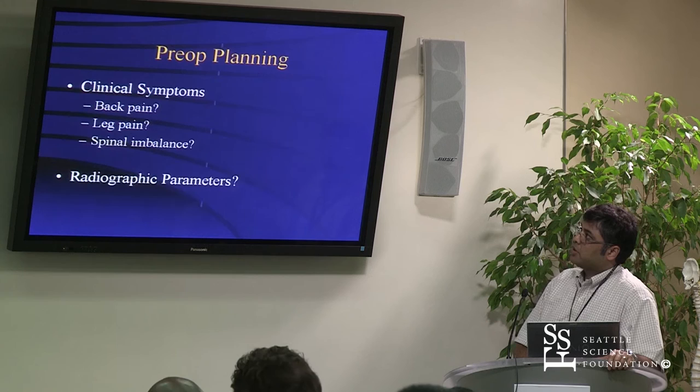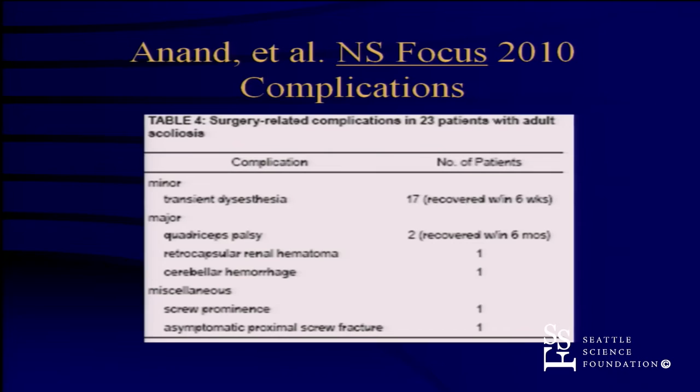This is some of the early work — Neil's early experience in 23 patients in 2010 when he tried MIS deformity. Here's his table of complications: dysesthesias in 17 out of 23 patients from doing a lateral approach, two quadriceps palsies — patients really have trouble walking with that — a renal hematoma, cerebellar hemorrhage, and some screw issues indicating essentially pseudoarthrosis. This is okay to do, but it wasn't spectacular in 2010.